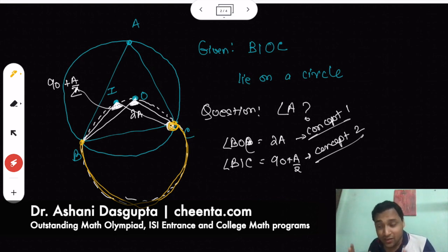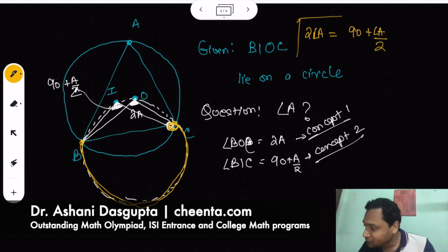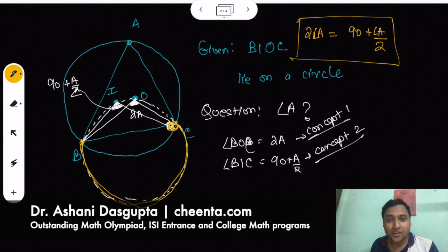So you can say twice of angle A, that is angle BOC, and 90 plus A by 2, these two are equal. So twice of angle A is equal to 90 plus angle A by 2. Can you find the value of angle A from this equation? It's just one step away. So give it a try, find the value of angle A from that equation, and we will meet in the next video with some more exciting mathematics. Stay well, bye bye.